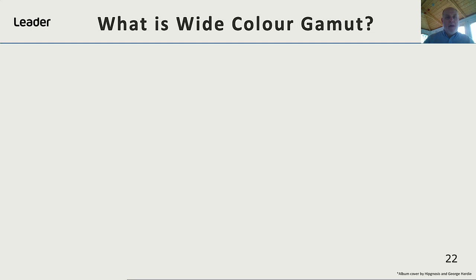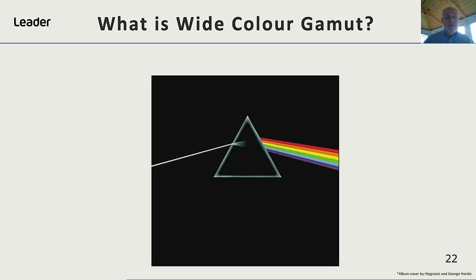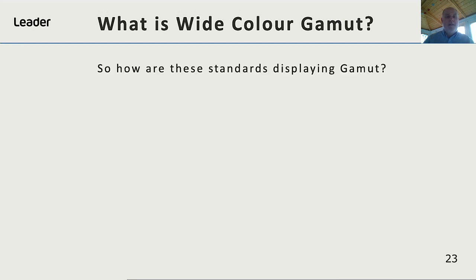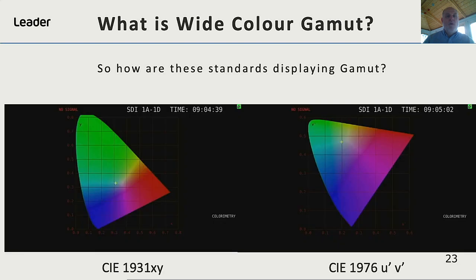So how do we display colour space? Well, Pink Floyd had a method of displaying it, but it's not really practical in day-to-day operation. Today we use the CIE colour chart, which was developed to display the entire visible spectrum of colours to the human eye. The chart on the left is the 1931 version, and the chart on the right is the 1976 version.